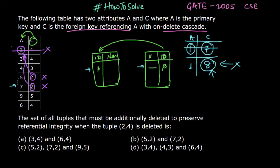Here we have 5 and 7. We have to make sure that we have to delete all those tuples which are referring to this 5 and 7. As here we have another tuple, this (9, 5), and this 5 is referring to this 5, we have to delete this tuple also.